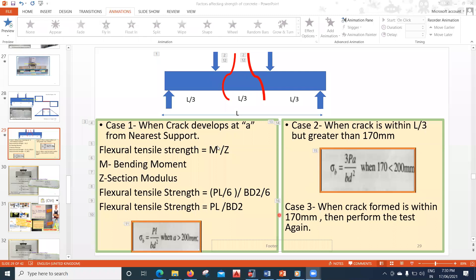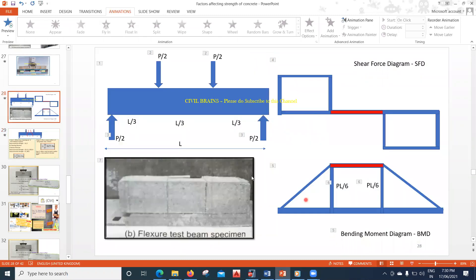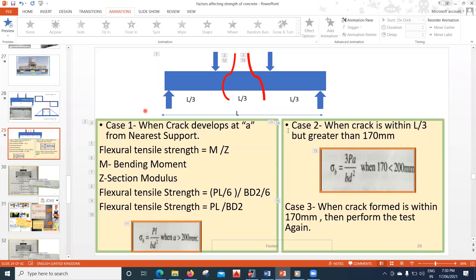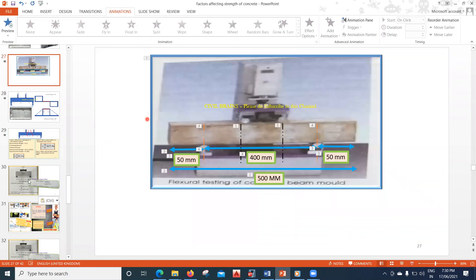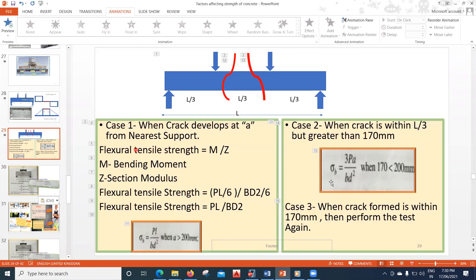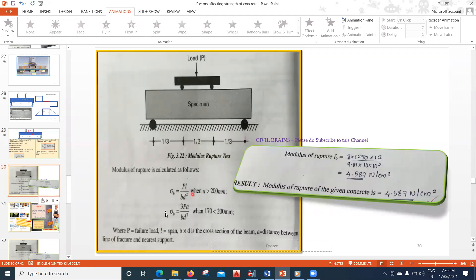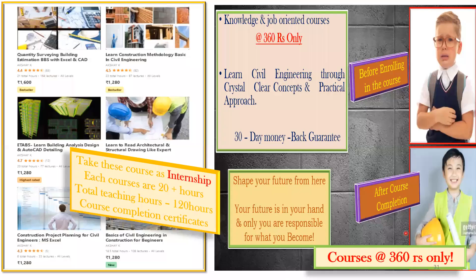In the next lecture, we will understand the three different cases based on where the crack forms — whether exactly at the center or somewhere in the middle third zone. There are case 1, case 2, and case 3, each with specific formulas. We'll understand which formula to apply based on the crack pattern developed in the beam. See you in the next lecture.